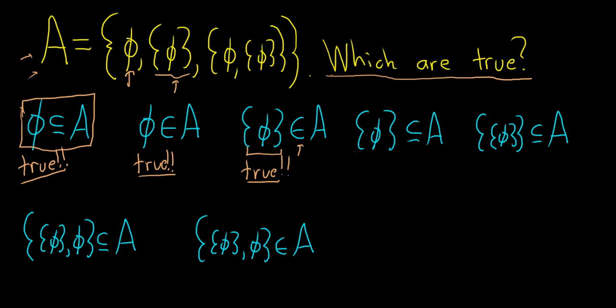This is saying that this set is a subset of A. This means that every element in this set is an element of A. Well the only element in this set is the empty set and that is an element of A, therefore the set containing the empty set is a subset of A. So this is also true.